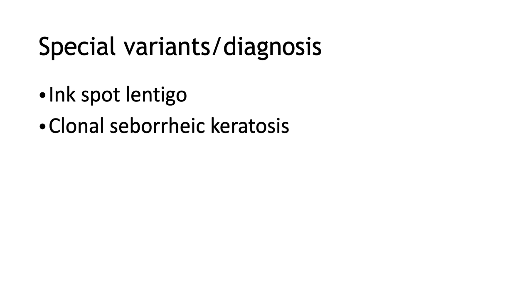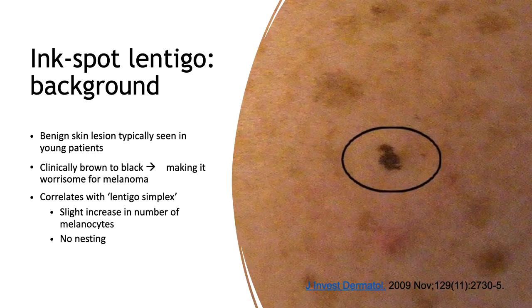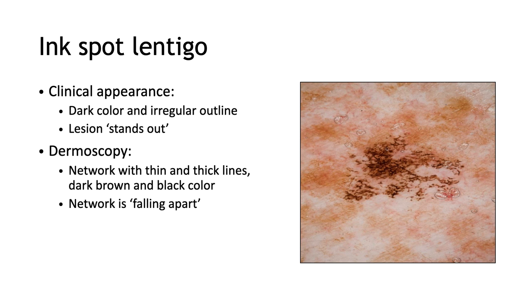Now let's see some special variants. The ink-spot lentigo is a benign skin lesion typically seen in young patients. It is clinically brown to black, making it worrisome for melanoma, and sometimes for pigmented BCC in dark skin types. It correlates with lentigo simplex on histopathology — a slight increase in the number of melanocytes with no nesting. On dermoscopy, we have a network with thin and thick lines that can be dark brown or black in color, and this network looks like it's falling apart, dispersing towards the periphery, which is classic of ink-spot lentigo.